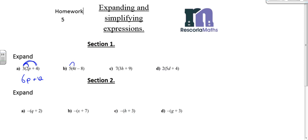Next: 5 lots of 4t is going to be 20t. We've got 5 lots of minus 8, which is minus 40. Next, we've got 7 lots of 3h, which is 21h. We've got 7 lots of 9, which is 63. That's 21h plus 63.